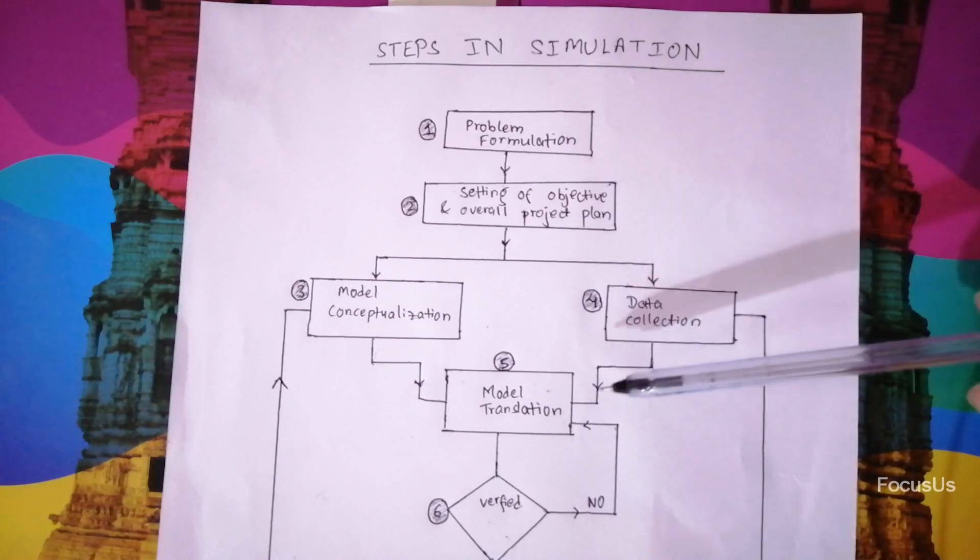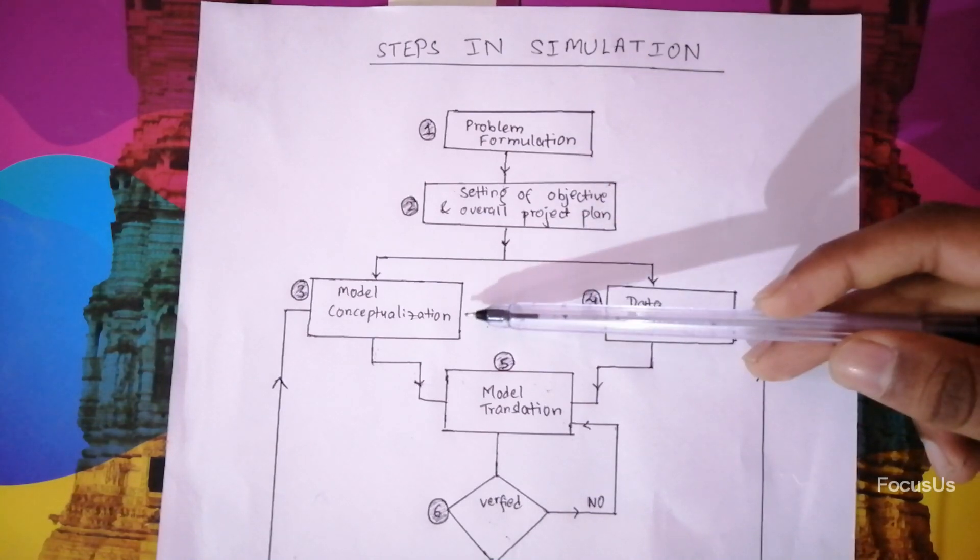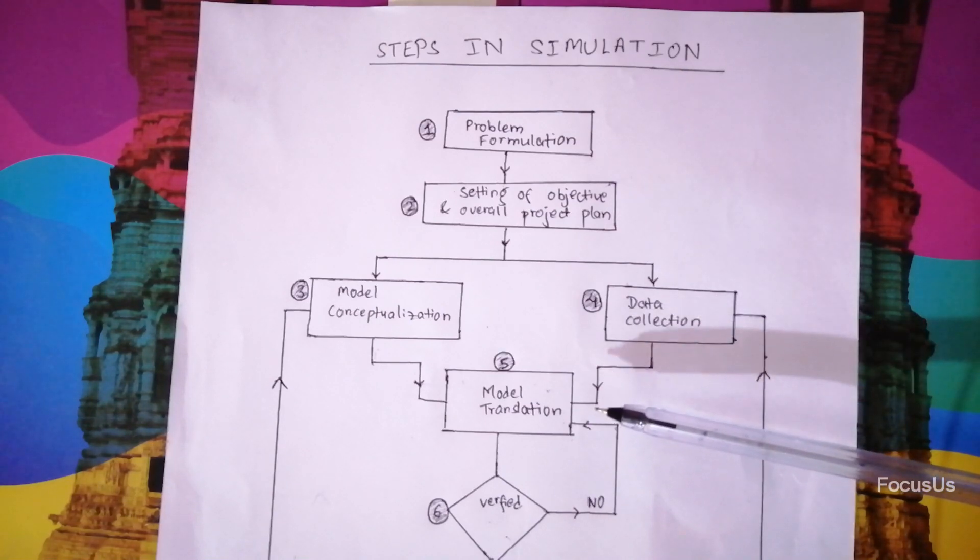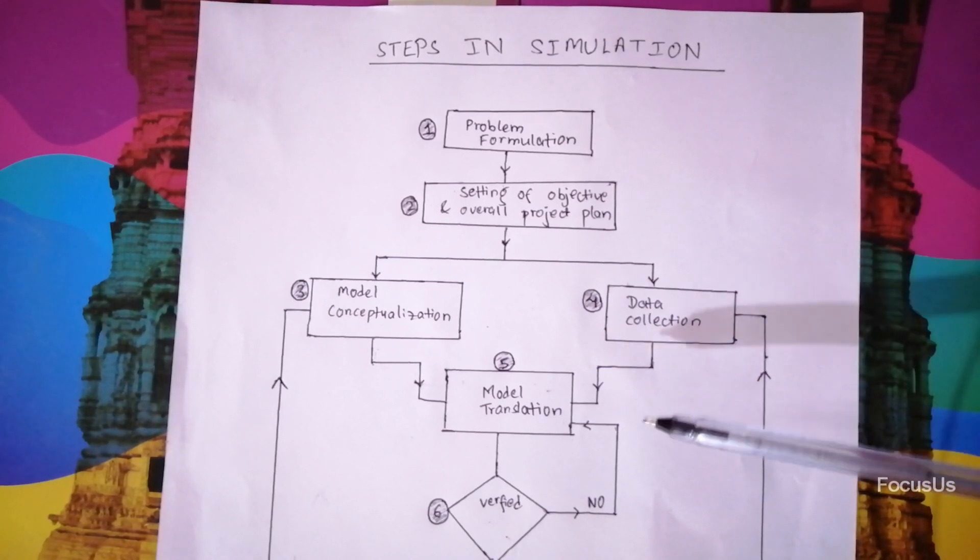So this together combined to give us the fifth point which is model translation. We have the concept or the blueprint here in conceptualization and then we have data here in data collection. Then together we start coding to make the real model. We can use general purpose language such as Java, C++ etc. or special purpose language and software such as Arena, Simio etc. These simulation languages and softwares are really powerful and flexible.